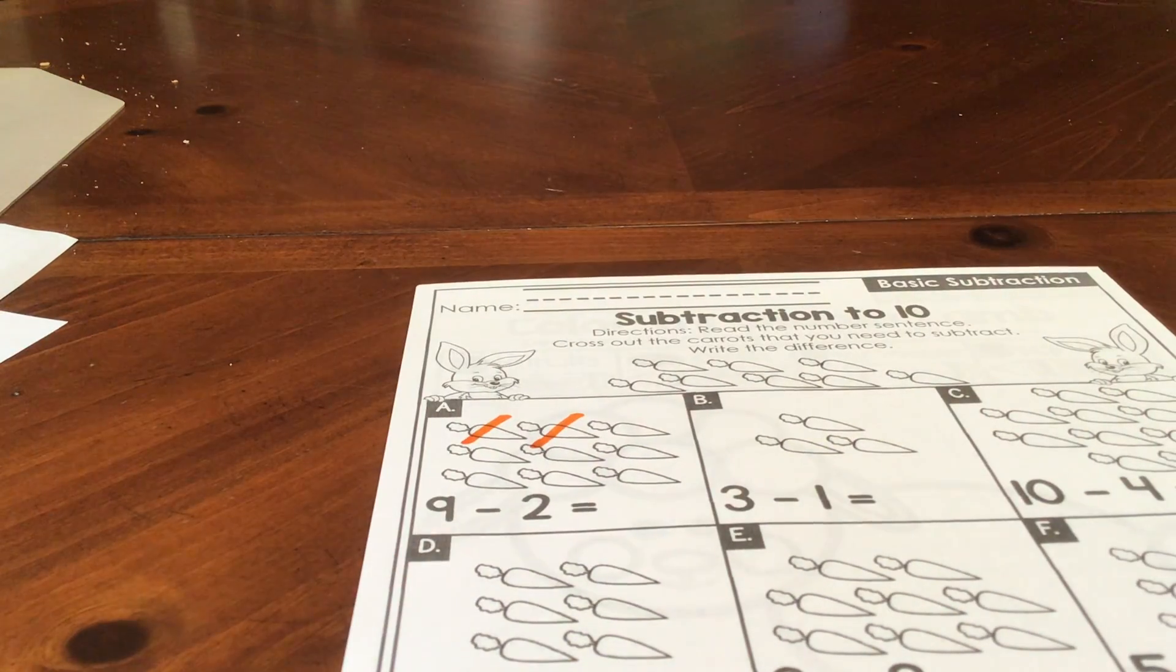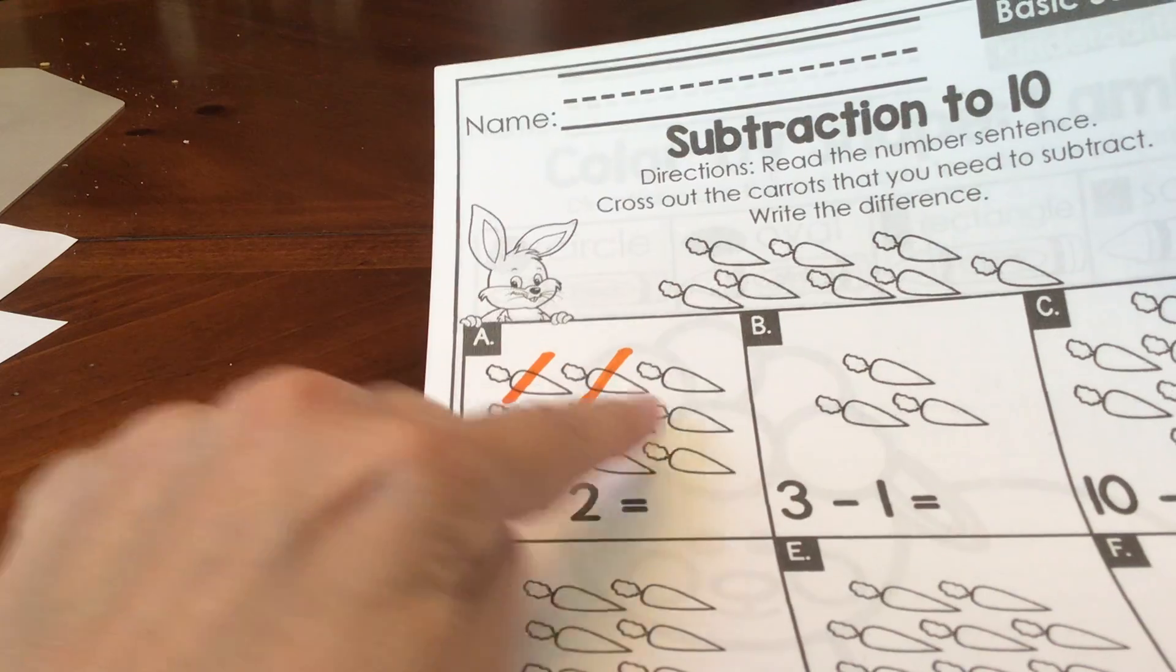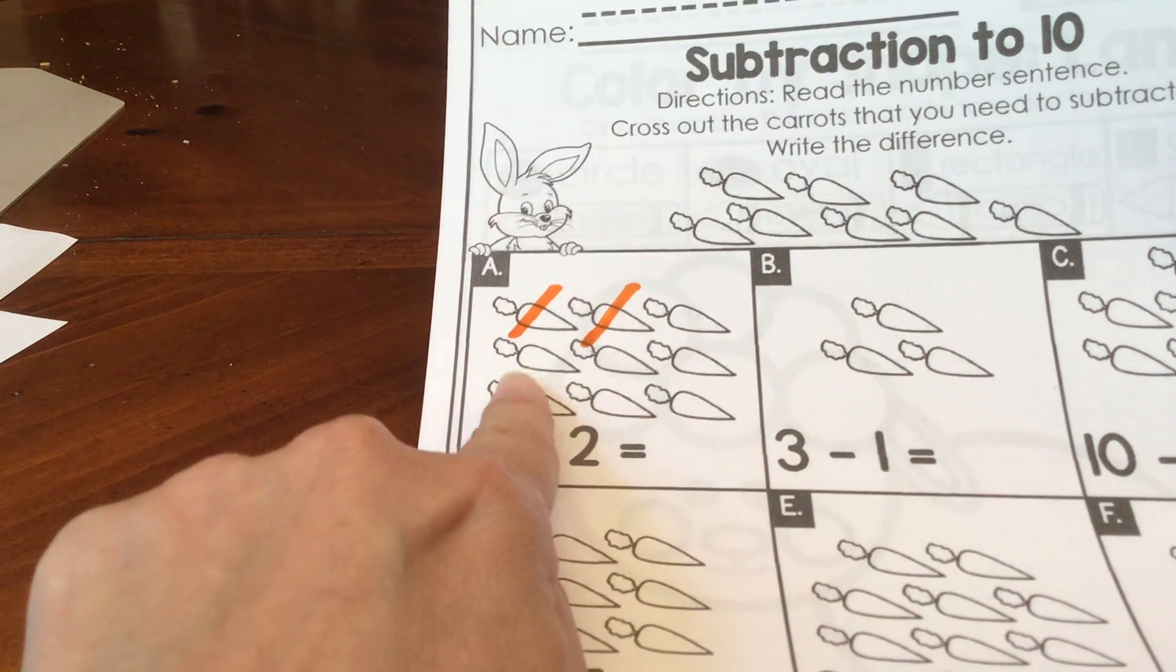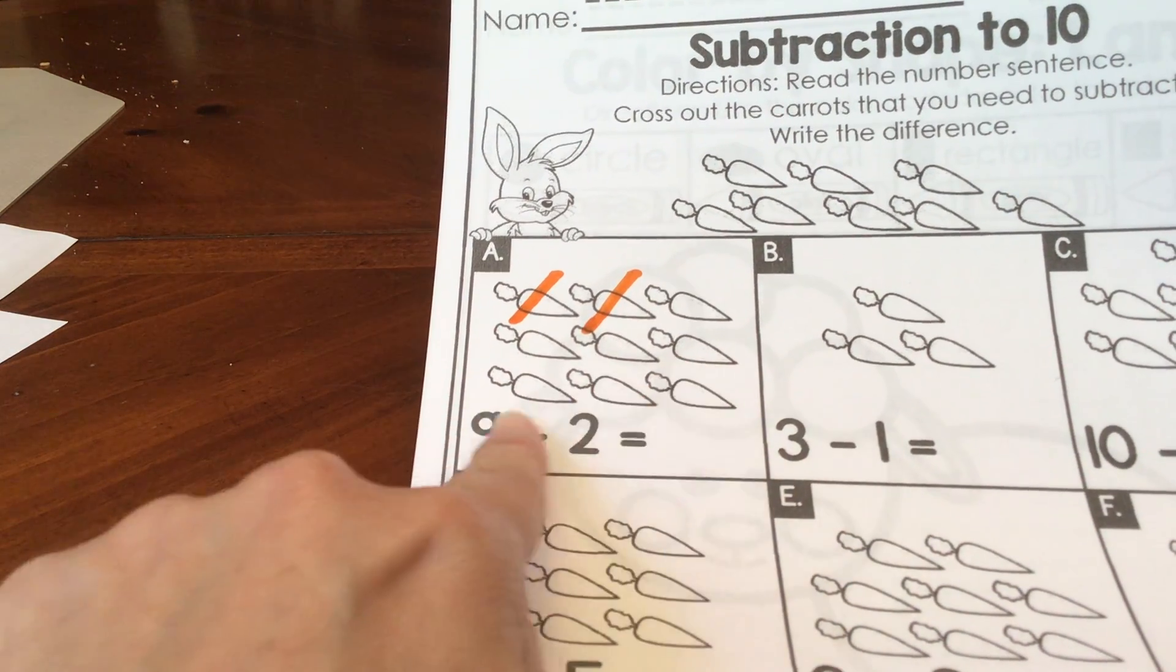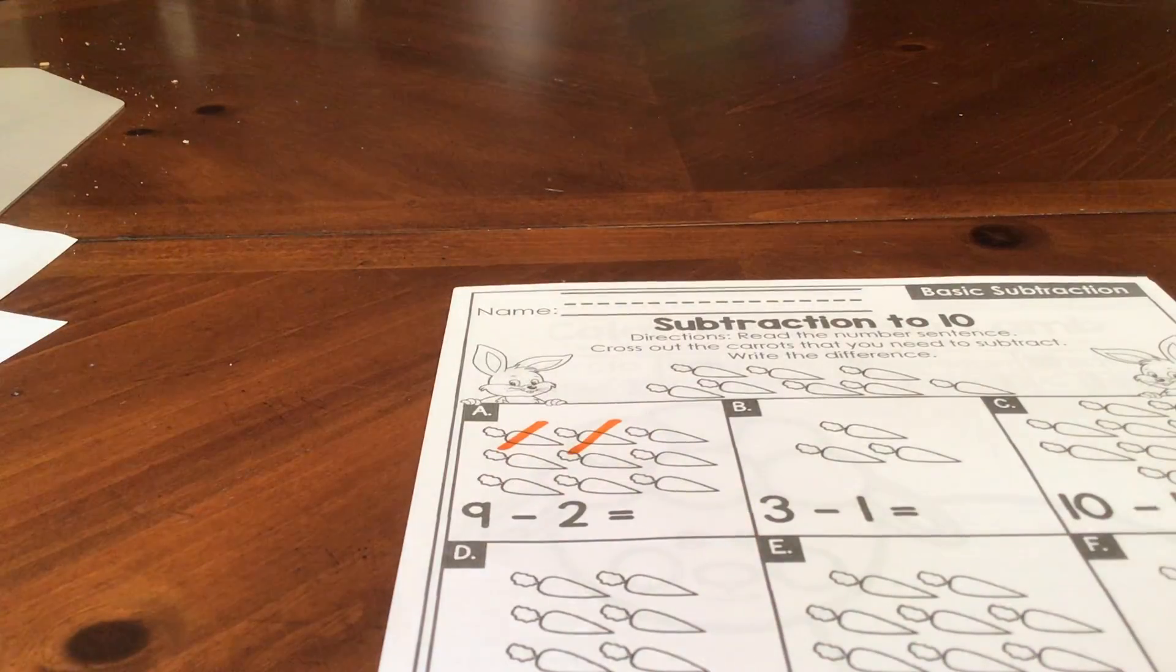So I'm going to cross those out. And now let's see what part of our group is left. One, two, three, four, five, six, seven. We have seven left.